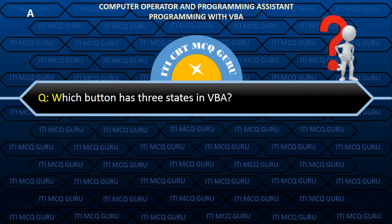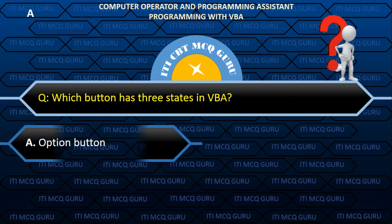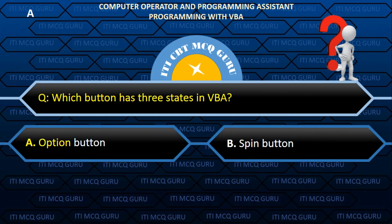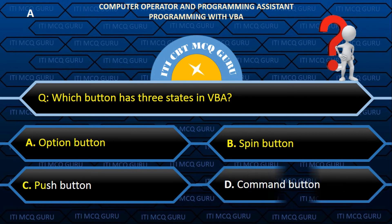Which button has three states in VBA? Answer: A. Option button.